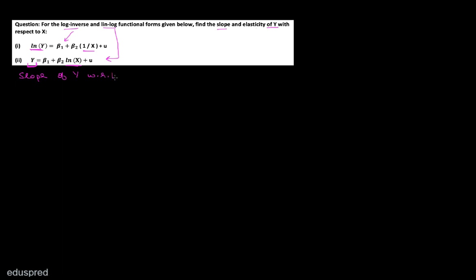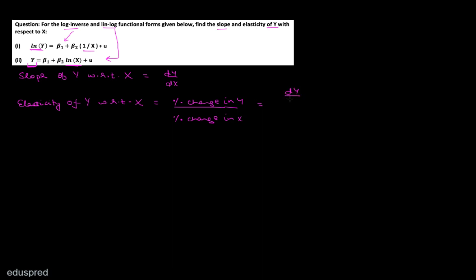First of all, let's write the expressions for the things we have to find. The slope of y with respect to x — where 'wrt' means 'with respect to' — is equal to dy/dx. The elasticity of y with respect to x can be written as percentage change in y divided by percentage change in x, which simplifies to dy/dx multiplied by x divided by y.